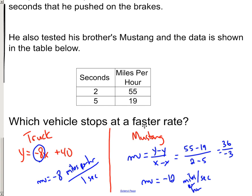Which vehicle stops faster? Well, if the Mustang's slowing down 12 miles per hour per second, it's stopping a lot faster than this truck. So that's a pretty easy question. The Mustang's stopping at a faster rate.